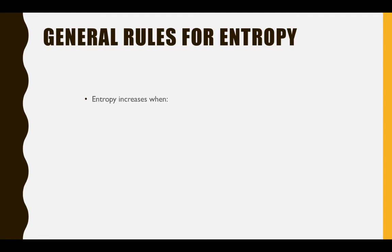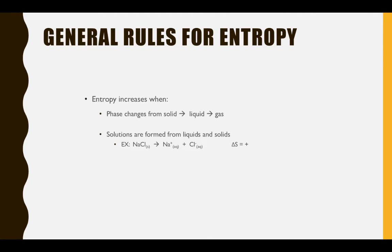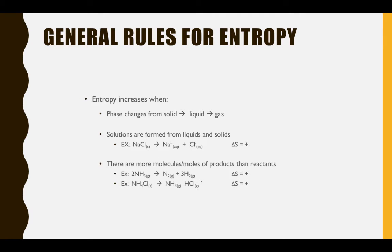Let's consider some general rules for when we see entropy increasing. When we go from solid to liquid to gas, entropy will increase. Likewise, when solutions are formed from liquids and solids, the dissolving of an ionic compound results in more particles since we have dissociation — if there are more particles in a system, there are more possible arrangements. When we create more moles of product than we had reactant, entropy increases. For example, going from 2 moles to 4 moles, or from 1 mole to 2 moles — more particles gives you more possible arrangements.